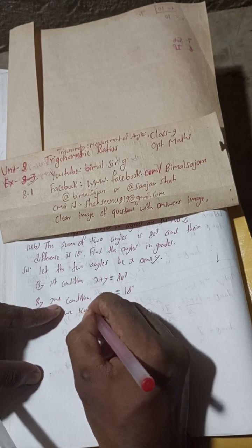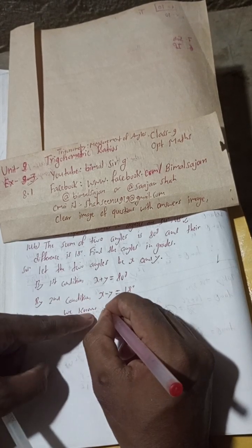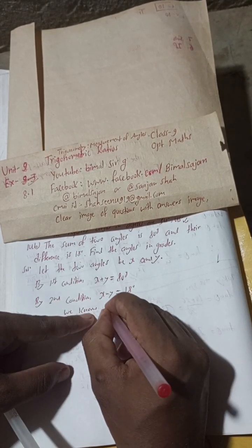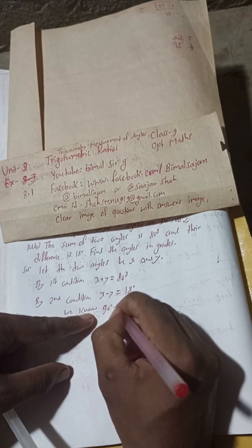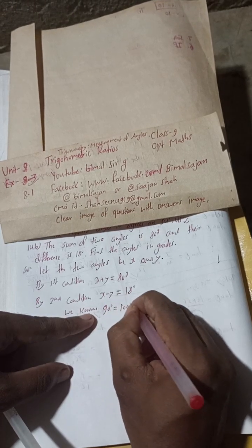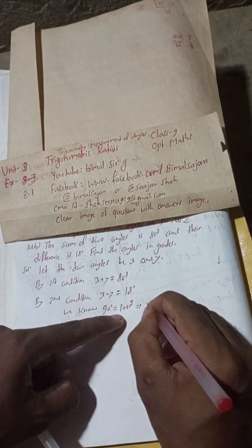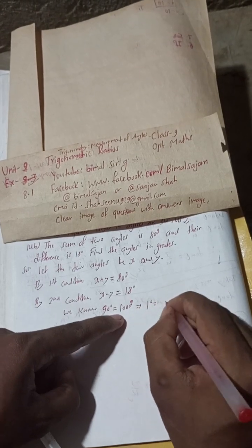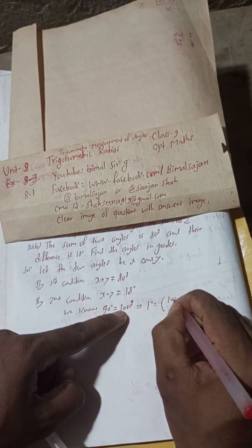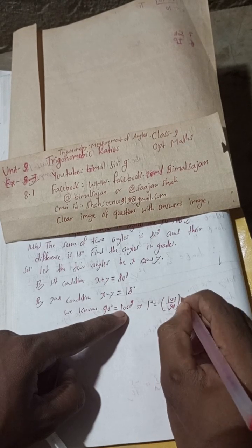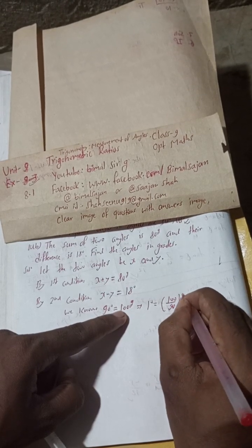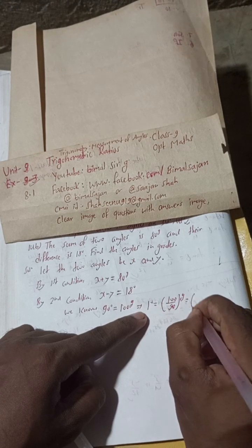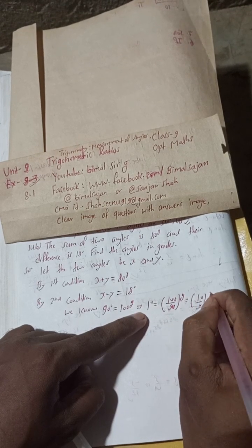This implies 1 degree is equal to 100 by 90, that is 10 by 9 grade. So 1 degree equals 10/9 grade.